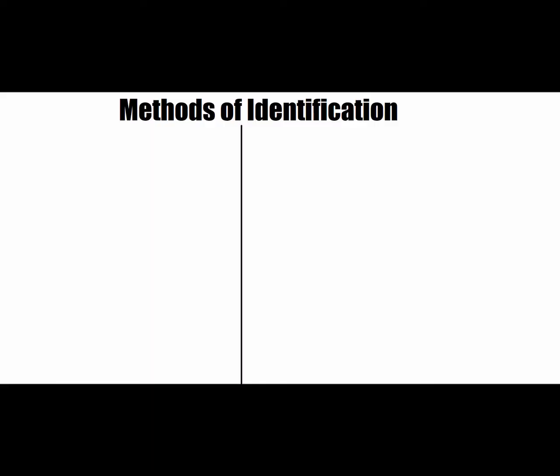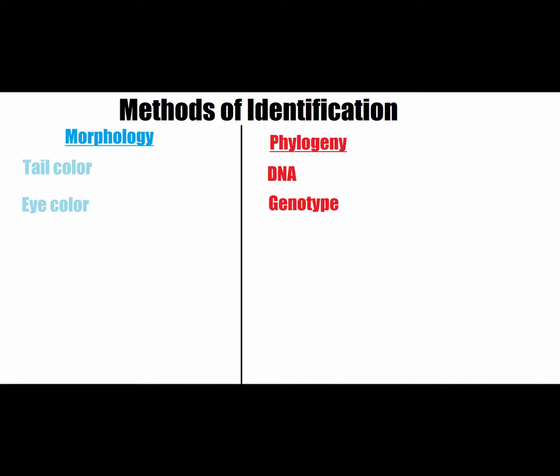The main way scientists — or taxonomists in this case — classify organisms is by using many methods, although there are two important main methods which they use. One method is morphology: basically classifying the organism based on what you see, like hair color, eye color, etc. Another method is phylogeny. Phylogeny is when you basically classify an organism based on what genes it has — i.e., DNA and genotype — basically what you don't see.